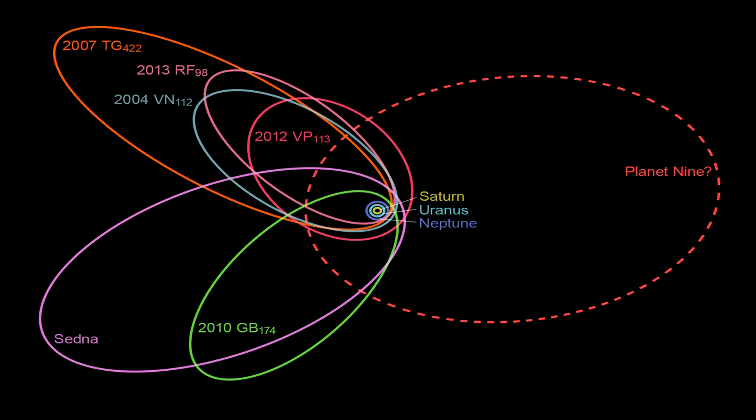Planet 9 takes around 10,000 to 20,000 years to orbit the sun. That's all for this video. Thanks for watching and take care.